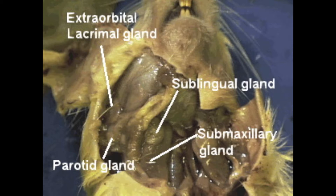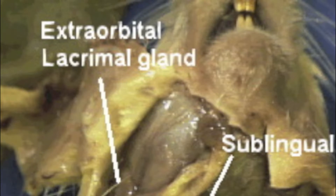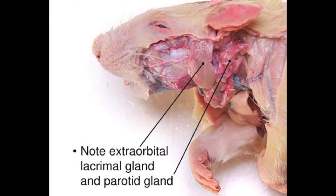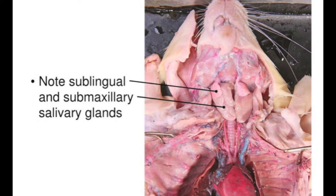Last but certainly not least are the extraorbital lacrimal glands. These are the rat's tear ducts. These are easy to remember — they lie just by the eye, hence orbital. Here's a lateral view of the parotid gland and the extraorbital lacrimal gland. This ventral view really shows off the submaxillary and the sublingual glands.